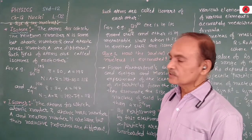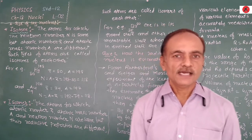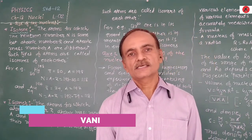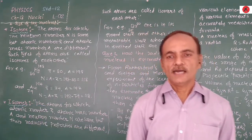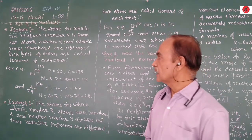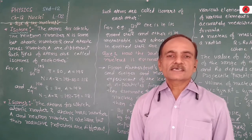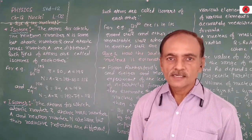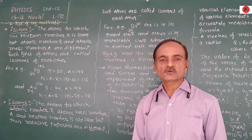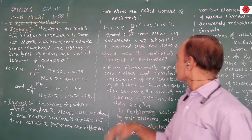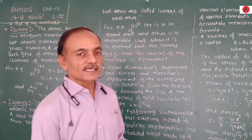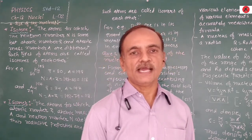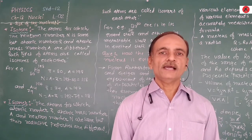Good morning friends. After our previous discussion on the definition of the nucleus, atomic mass, atomic number, neutron number, and the symbol of a chemical element, we are now going to discuss the different types of nuclei. We will cover isotones and isomers, and after that, the size of the nucleus, binding energy of the nucleus, and binding energy per nucleon.